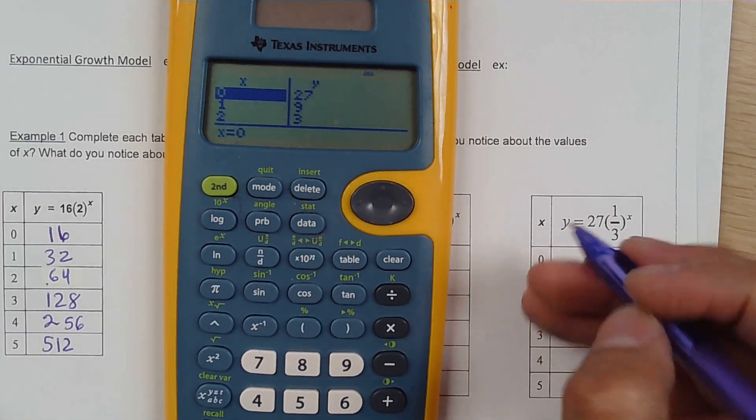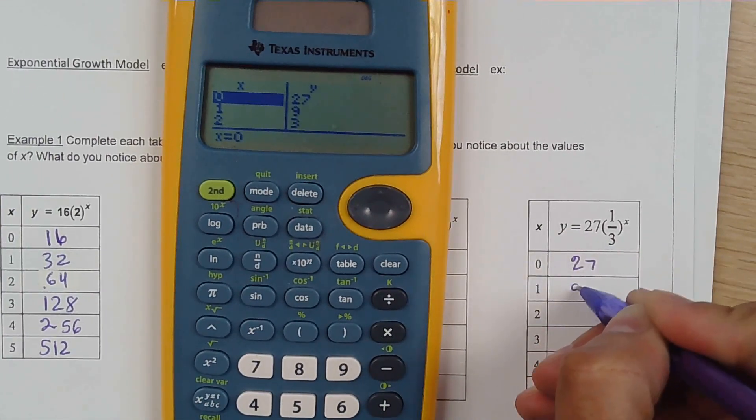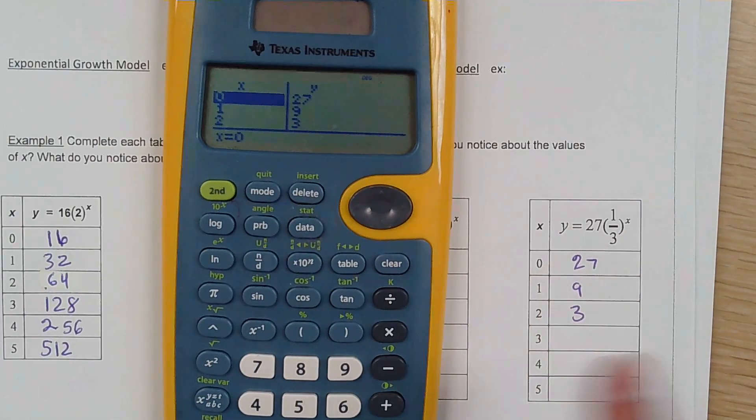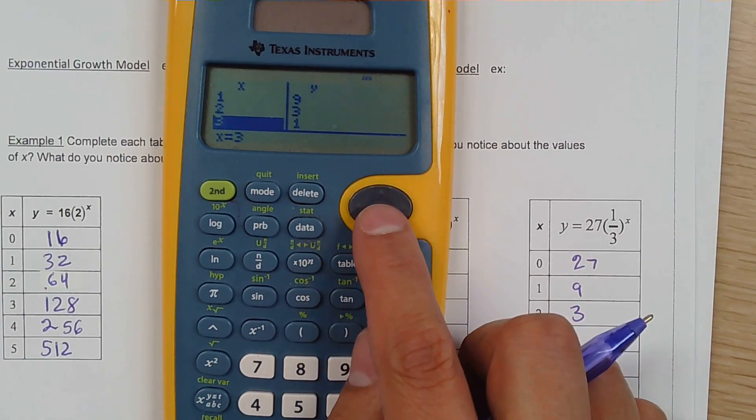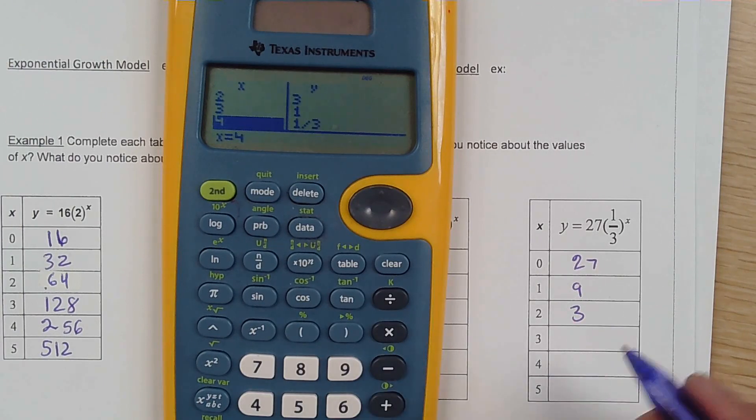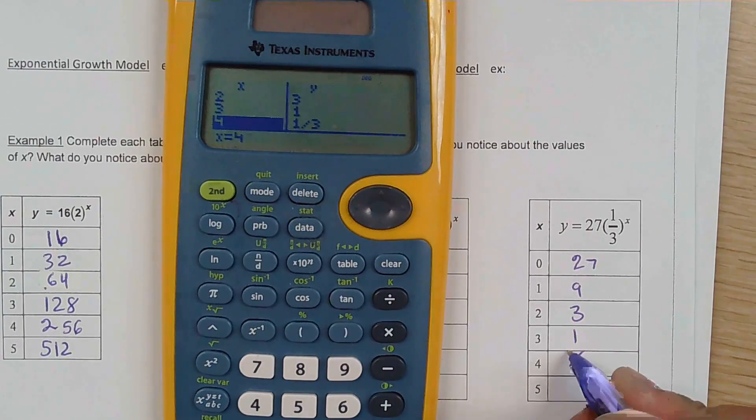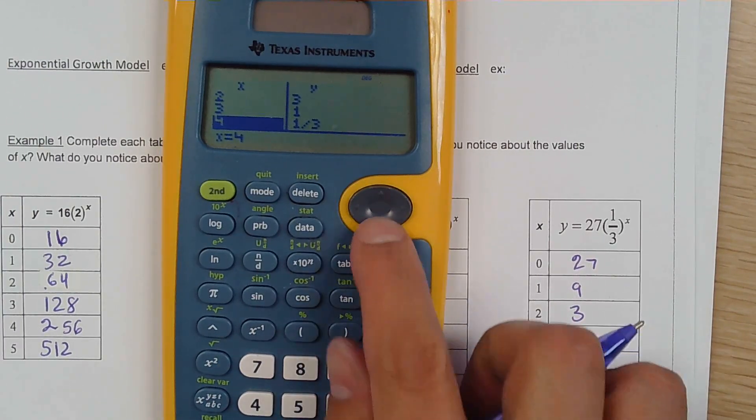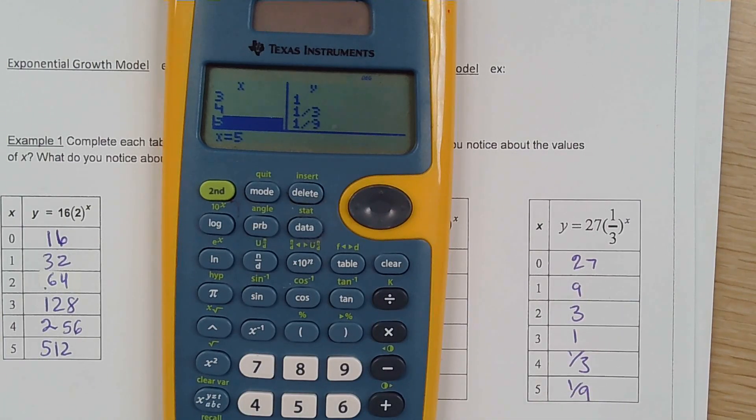And there it is. Those are my outputs. 27, 9, 3. And then 1 and 1 third. 1, 1 third and 1 more. 1 over 9. And we are done.